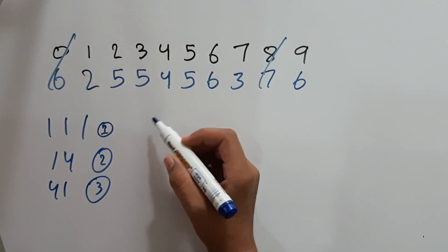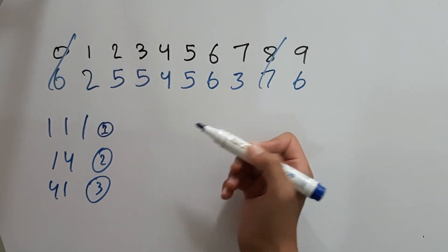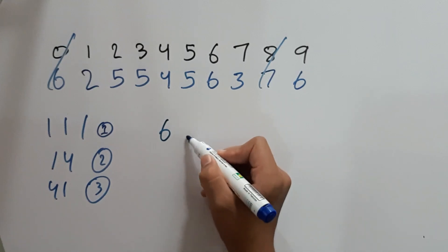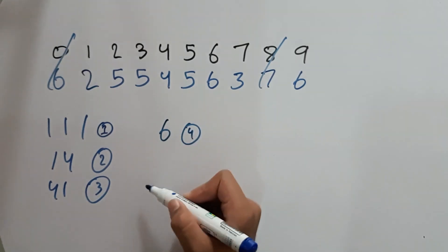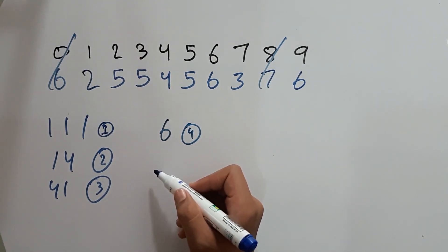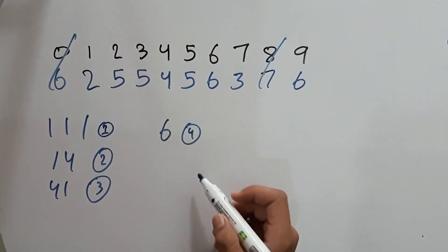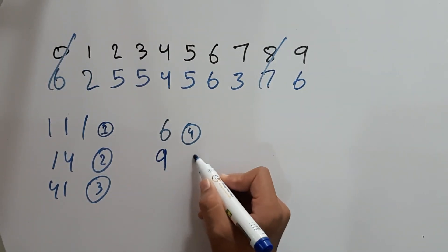For number 4, we can use just 6 because it also contains 6 matchsticks. For number 5, we can use 9 because it also contains 6 matchsticks.